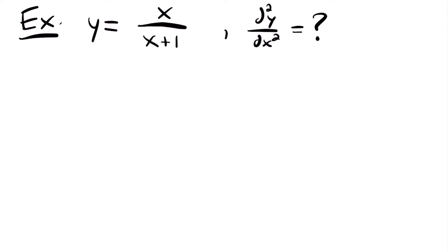Next, let's look at this example: y equals x divided by x plus 1, and we want to find the second derivative of that function. This is another notation for representing the second derivative when your function is defined with y. In this case we have a function where we're going to need to use the quotient rule for derivatives, because we have one function being divided by another. This one's going to be a little tricky, but it's nothing we can't handle.